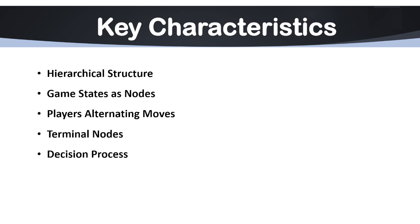Now let's look at some key characteristics. The first is hierarchical structure. The tree starts from the root node representing the initial state of the game. Branches represent possible moves, and the tree grows deeper as the sequence of moves unfolds — we can go deeper and deeper. These are called the levels of the game tree.